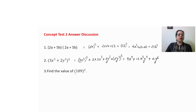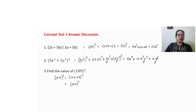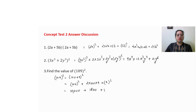Now find the value of 109 square. We can write 109 as (100 plus 9) whole square. Using the identity: 100 square plus 2 into 100 into 9 plus 9 whole square, this gives 10,000 plus 1,800 plus 81.